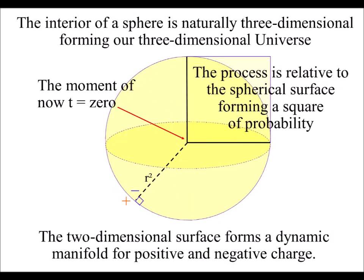The interior of a sphere is naturally three-dimensional, and the two-dimensional surface forms a dynamic manifold for positive and negative charge. There is an infinite number of line symmetries within an expanding sphere.